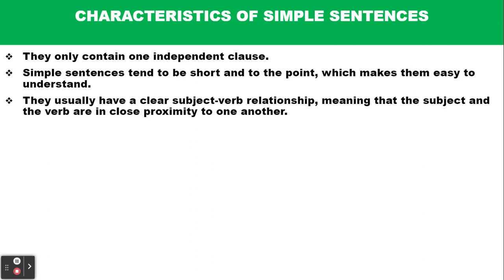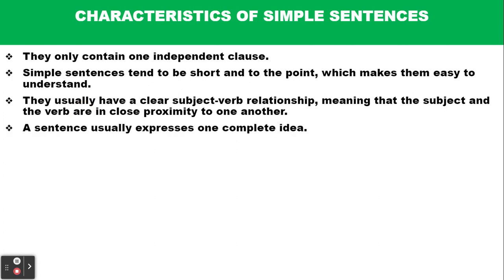Simple sentences usually have a clear subject-verb relationship, meaning that the subject and the verb are in close proximity to one another. A sentence usually expresses one complete idea.